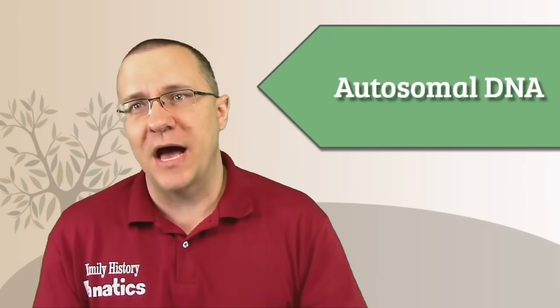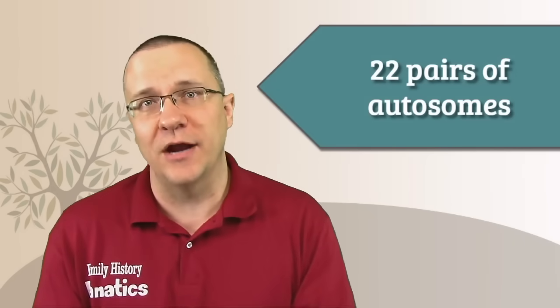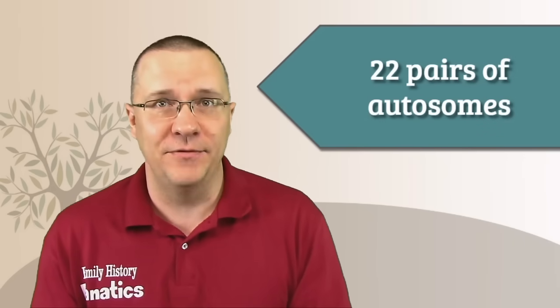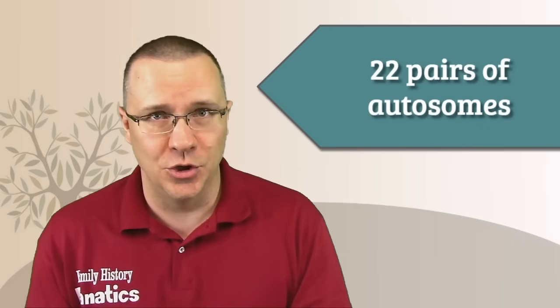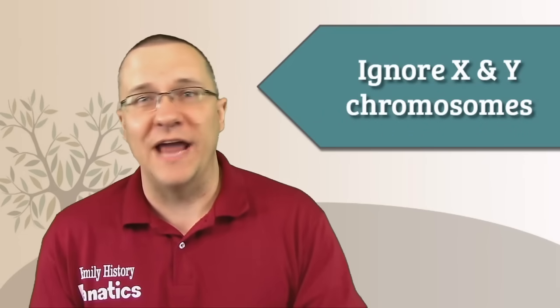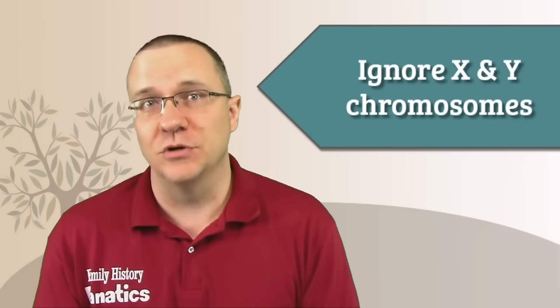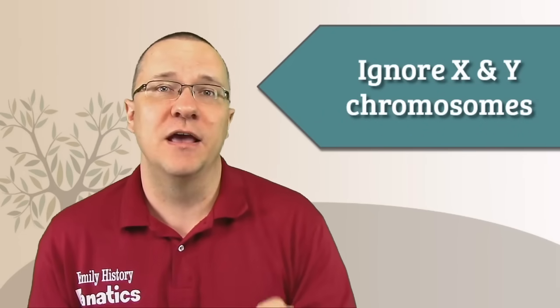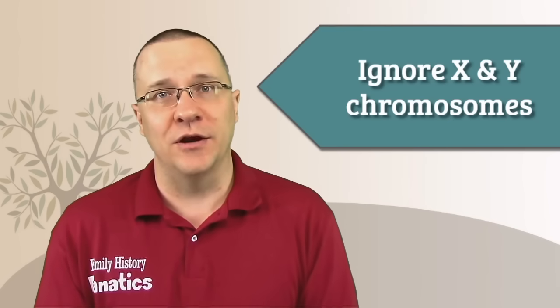Now let's begin by understanding what DNA we're talking about. Today we're just talking about autosomal DNA. Autosomal DNA is the 22 pairs of chromosomes that you have that does not include your mitochondrial DNA, and it also does not include X or Y. That's the 23rd pair of chromosomes. So we're just talking about the first 22 pairs of chromosomes.